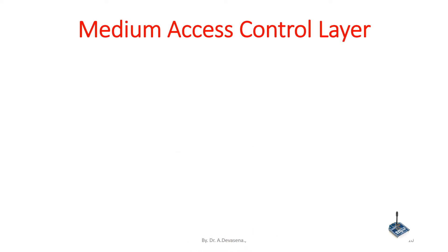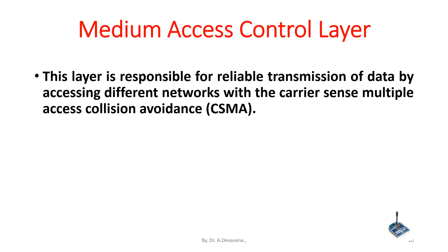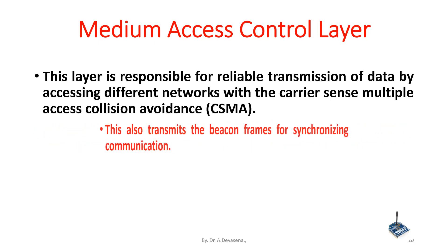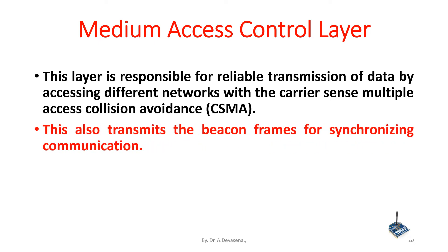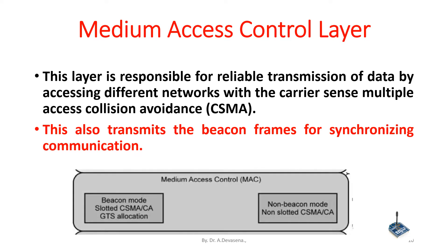Medium access control layer: this layer is responsible for reliable transmission of data by accessing different networks using the Carrier Sense Multiple Access Collision Avoidance (CSMA/CA) technique. It also transmits beacon frames for synchronizing communication. The MAC layer of ZigBee operates in two modes: beacon mode, which uses slotted CSMA/CA, and non-beacon mode, which uses non-slotted CSMA/CA.